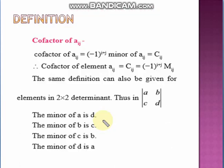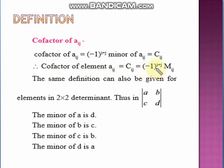Now what about the cofactor? The cofactor of Aij is equal to (−1)^(i+j) multiplied by the minor of Aij, and is denoted by Cij. In some books it is denoted by capital Aij, but here I have used the capital letter C. So the cofactor Cij = (−1)^(i+j) × Mij. You have to multiply the minor with (−1)^(i+j) to get the cofactor.